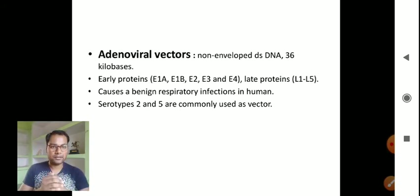Adenoviral vectors: these are non-enveloped DNA, 36 kilobases. Early proteins include E1A, E1B, E2, E3, and E4, and late proteins L1 to L5. They cause respiratory infections in humans, and serotypes 2 and 5 are commonly used as vectors.